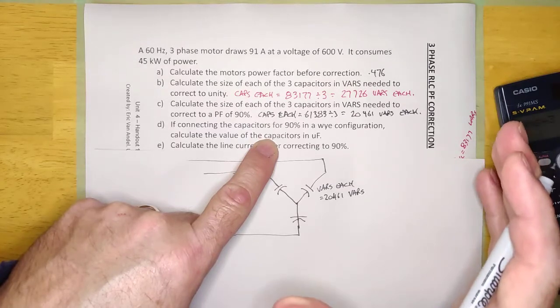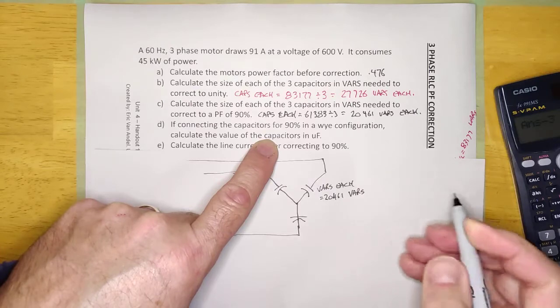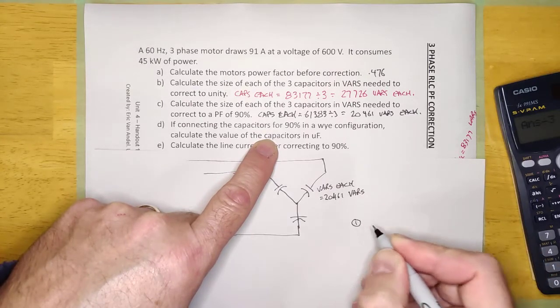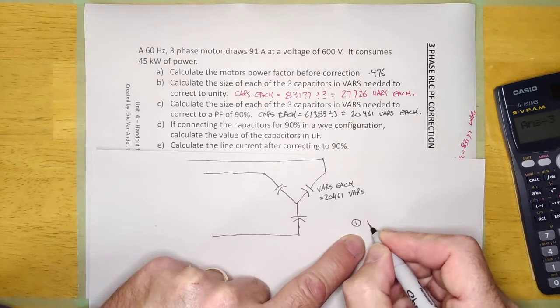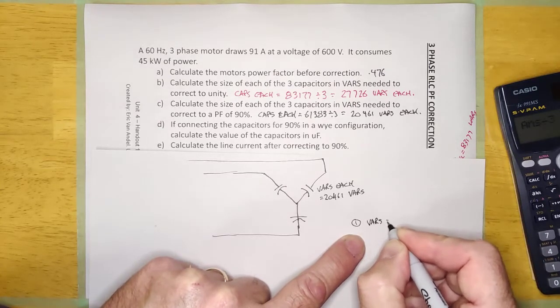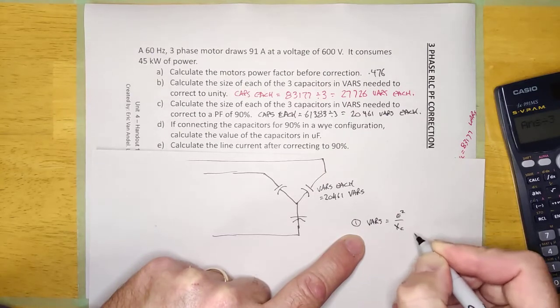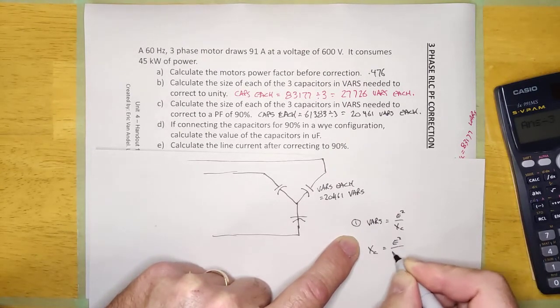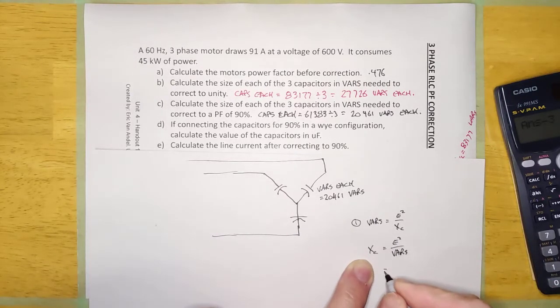This is going to be very similar to single phase. If you know the VARs of the capacitor, it's going to be a two-step process. And so, step one was use this formula right here to calculate how many ohms it is. VARs is equal to E squared over XC. And so, XC is equal to E squared over VARs. And we're going to figure out how many ohms this thing is.